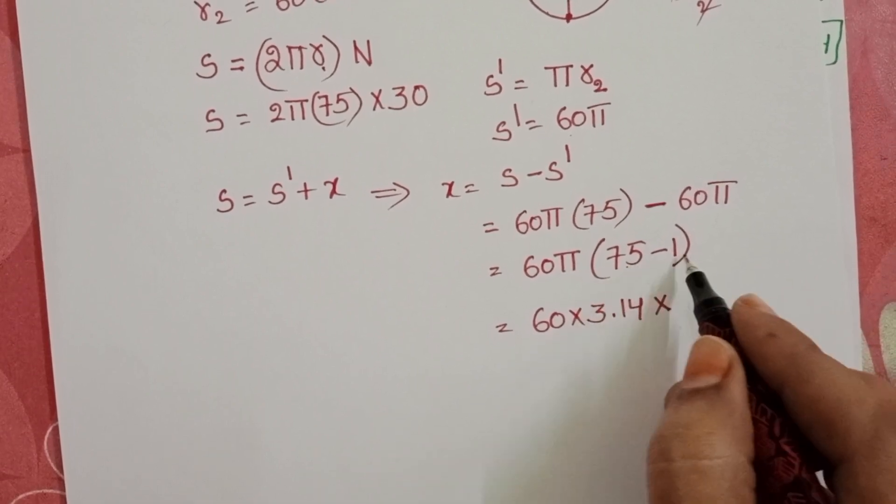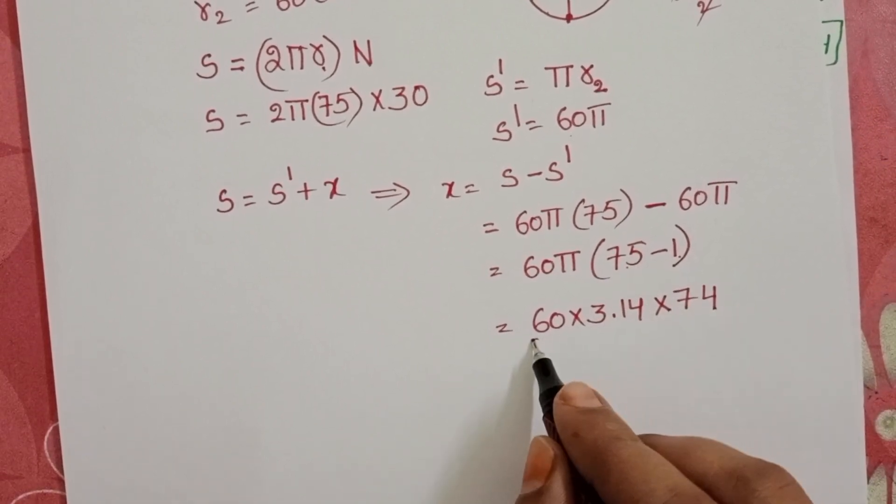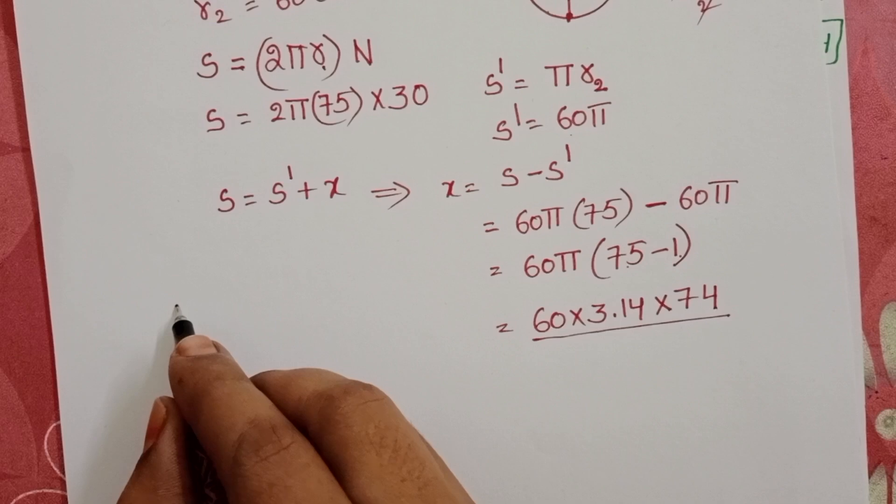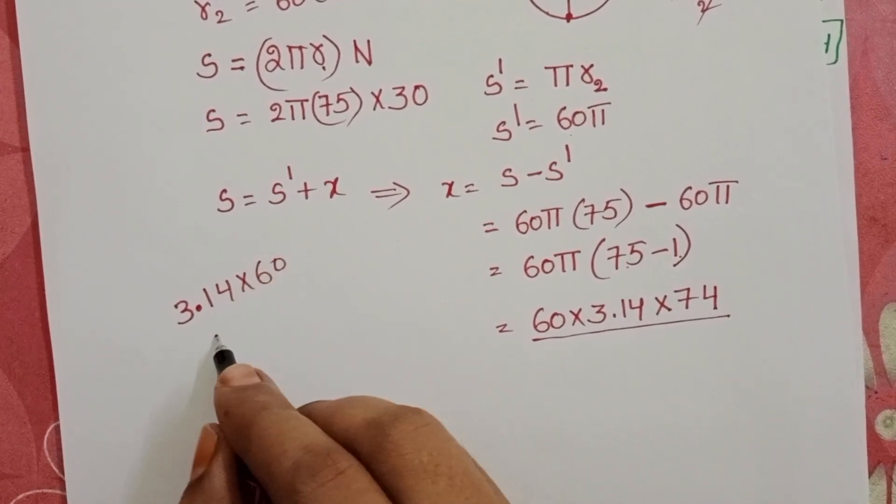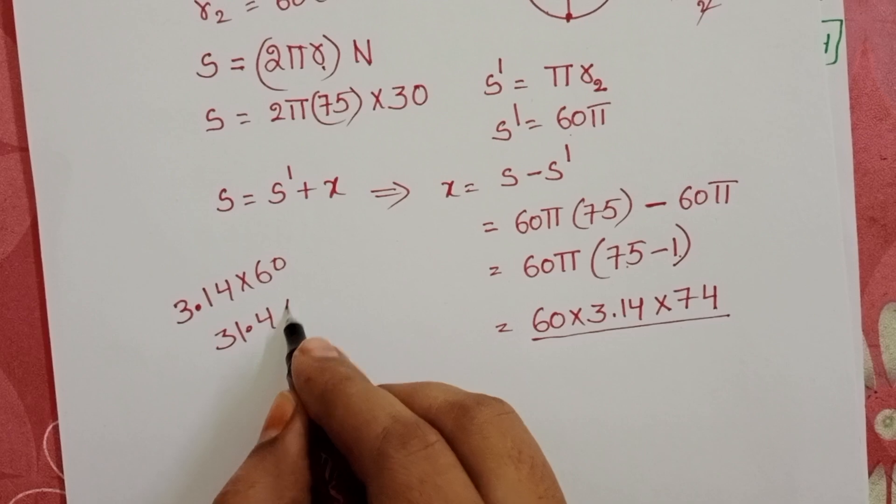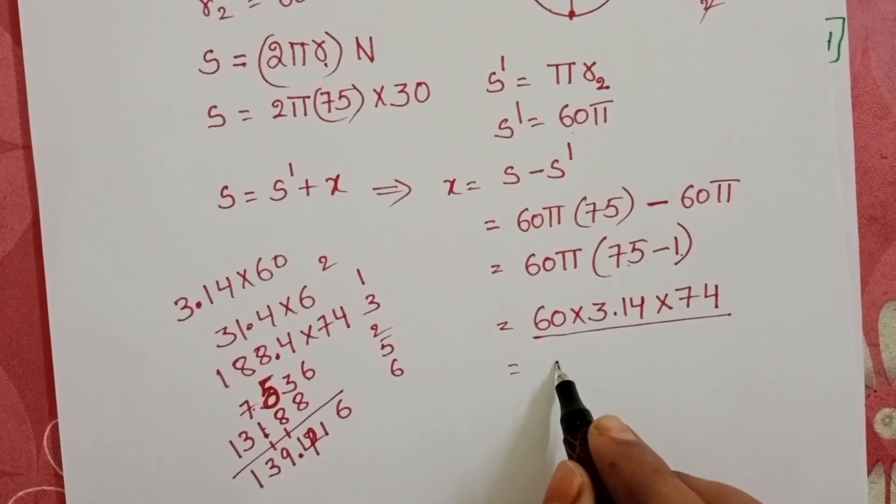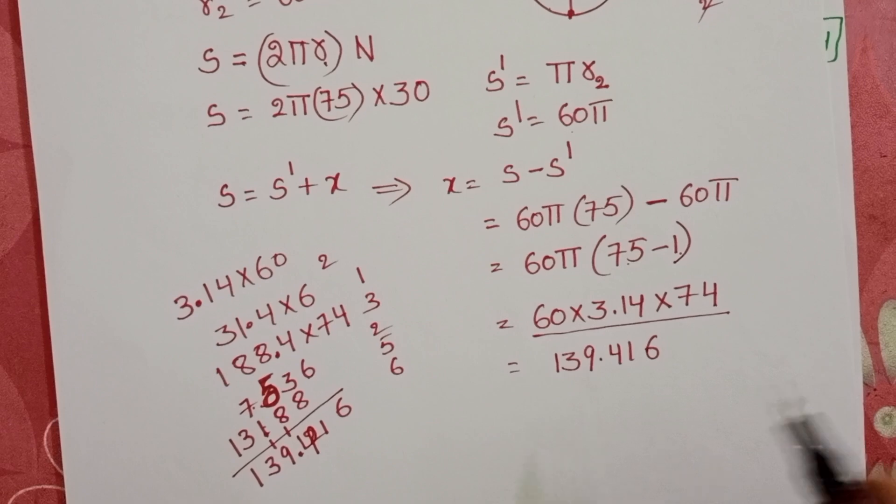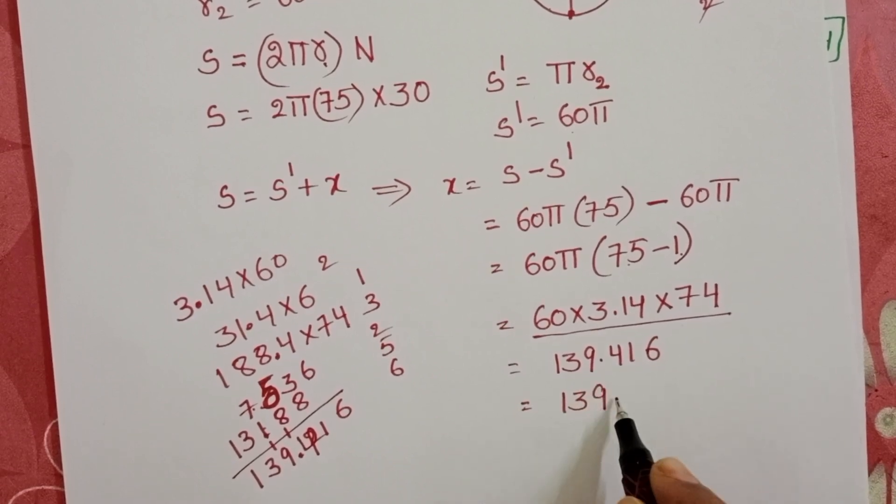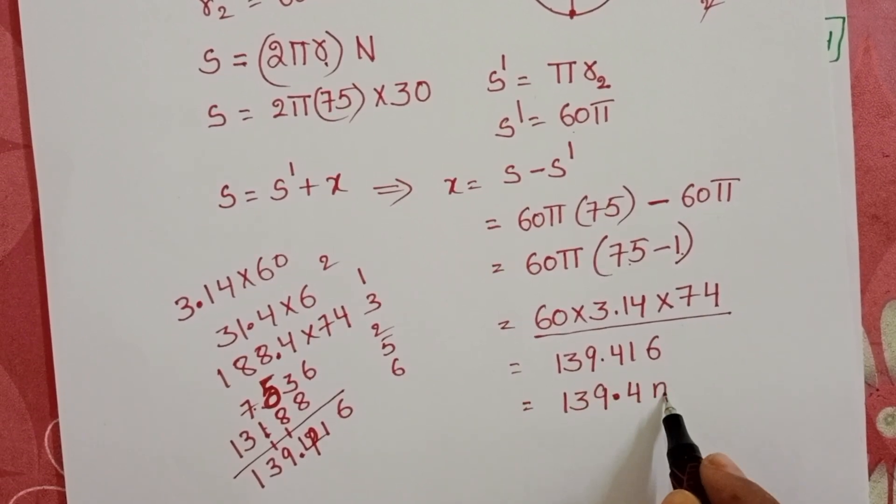Given π value is 3.14, into 75 minus 1. Now simplify these values. 3.14 into 60, that means 31.4 into 6, equals 139.416.